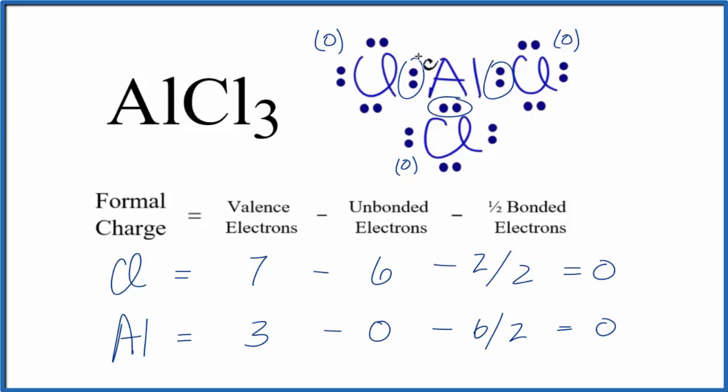So the formal charge on the aluminum in AlCl3 is 0. You might have been tempted to try to form some kind of double bond here between the aluminum and the chlorine to give the aluminum an octet. If you do that,